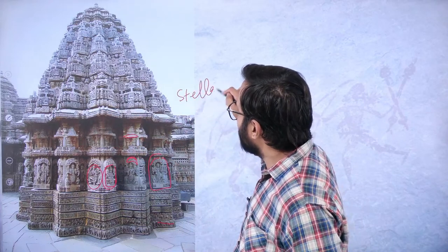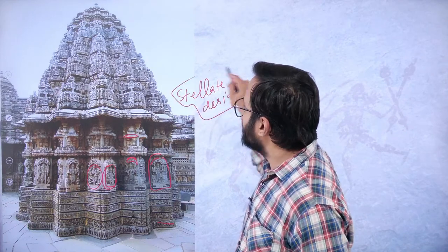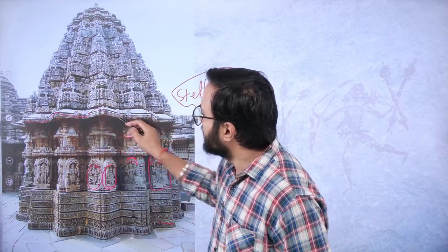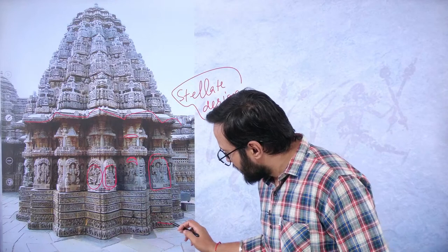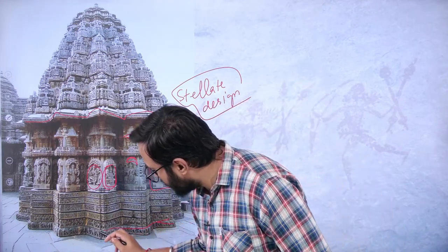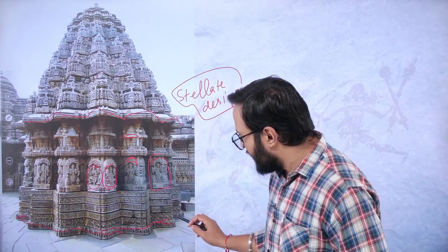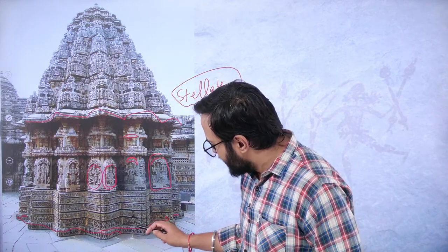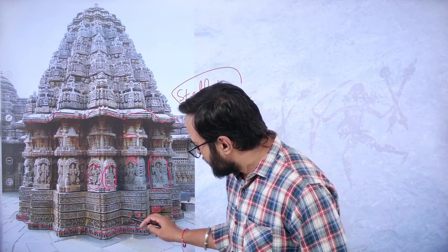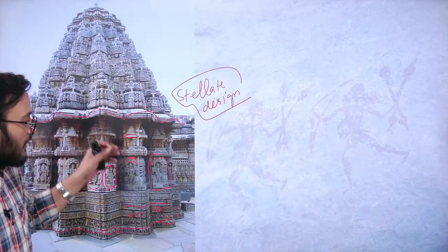The ground plan follows the stellate design — a pattern like a diamond with multiple edges. These temples are related to the Veser style, constructed by the Chalukyas, Hoysalas, or Kakatiyas. For example, the Ramappa temple, constructed by the Kakatiya dynasty, has a tower that looks like an attempt to create a pyramid — up to a certain point resembling a Dravidian tower, and above that resembling a Nagar-style tower.